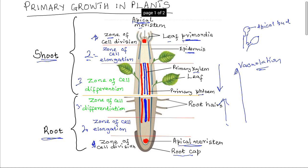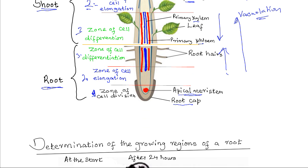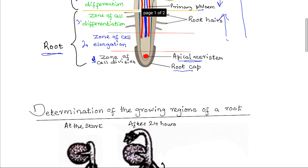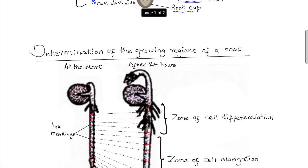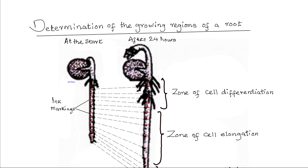One way of showing that growth has taken place in a plant is to demonstrate the different growing regions of a root. This is done using a germinating seedling, for example of a bean or a pea. We ensure that the germinating seedling has a straight radicle — we pick those with straight radicles. The radicles are then marked with indelible Indian ink at about two-millimeter intervals. The seedlings are then kept in moist cotton wool and left to grow for 24 hours.